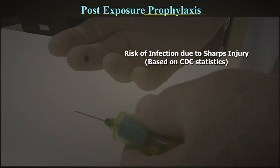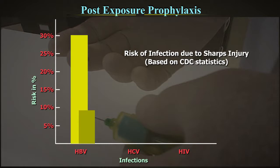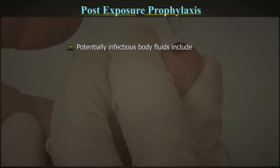Risk of infection due to sharp injuries. For percutaneous exposure based on CDC statistics: Hepatitis B virus risk was 9–30%, HCV risk was 3–10%, and HIV risk was 0.25–0.3%.